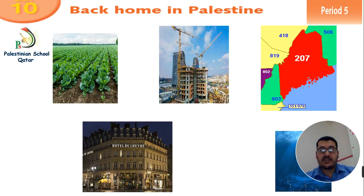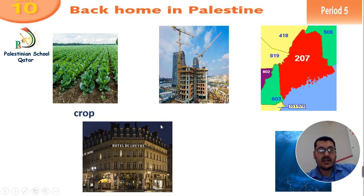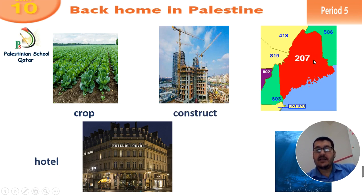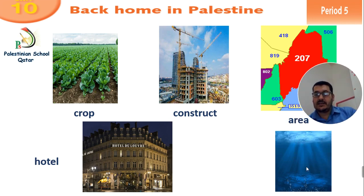We have five pictures here and I need you to guess the meaning of each picture. The first one: crop. And the second one: hotel. The third one: construct. And here, this place — the red area, we call it area. And the last one here in the sea, inside the sea, it is deep.